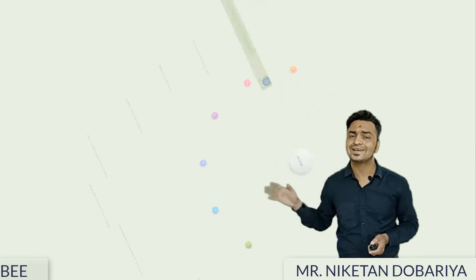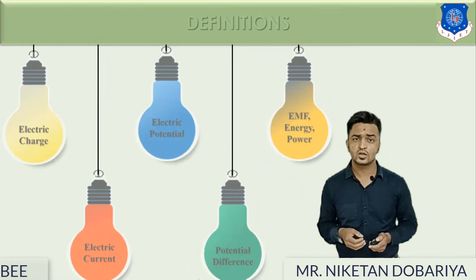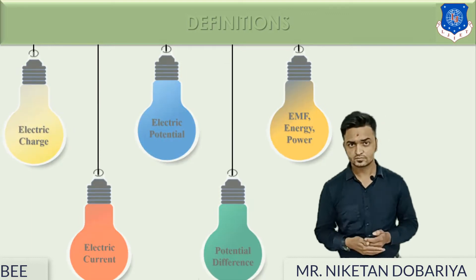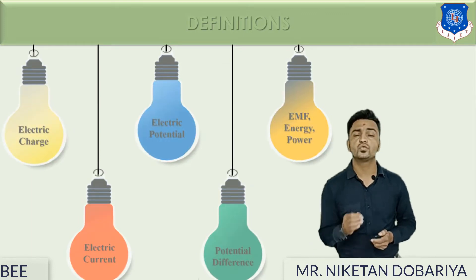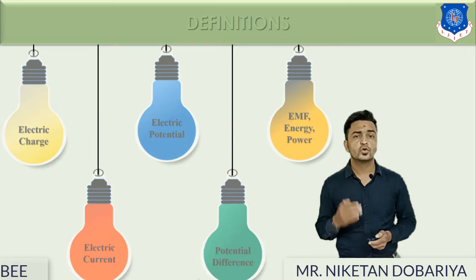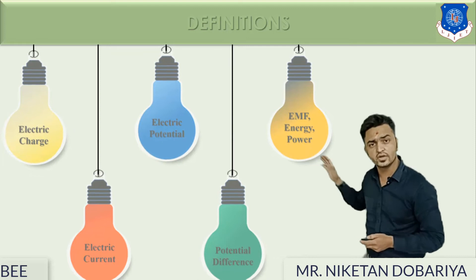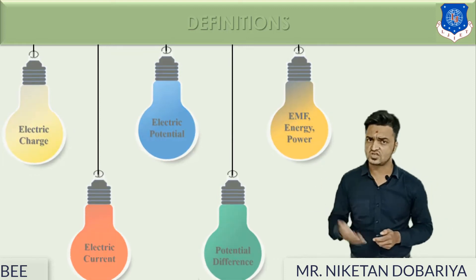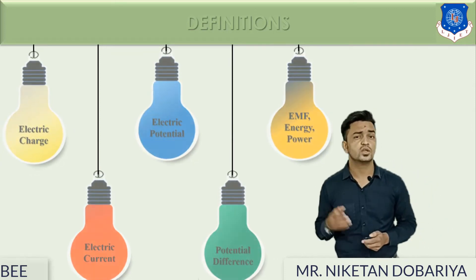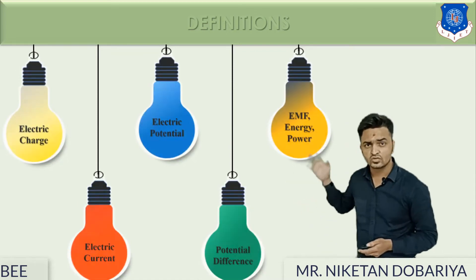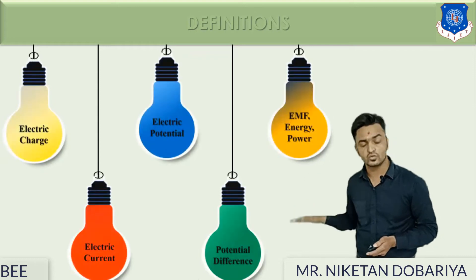These are the contents of chapter one. In this first video, we are going to start the first topic of our first chapter, DC circuits. In this first video lecture, I am going to introduce the basic terms of electricity: what is charge, what is current, what is potential, what is potential difference, and more. These terms are going to be discussed in this video.